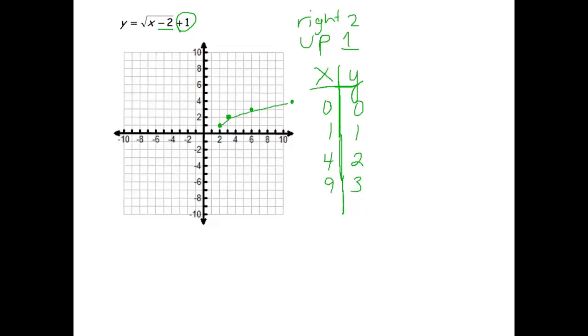And there is our new graph. And the domain of this would be 2 to infinity. Notice that is the farthest to the left this graph goes. Infinity is the farthest to the right this graph goes. Range, the lowest it goes is 1, and the highest it goes is infinity. So we have our domain and range.